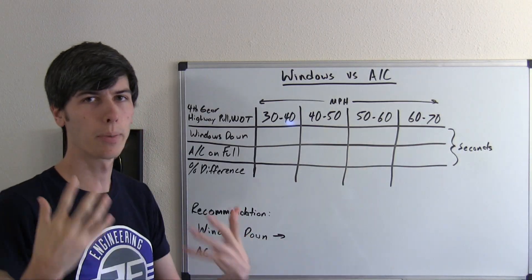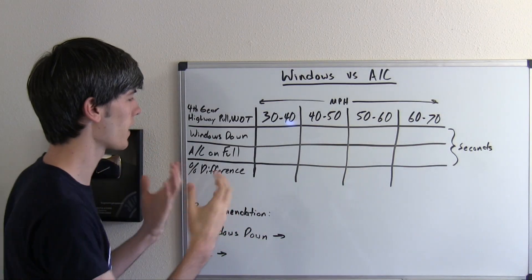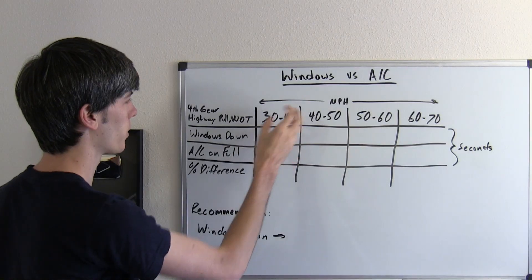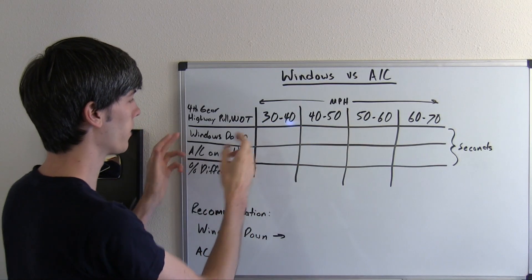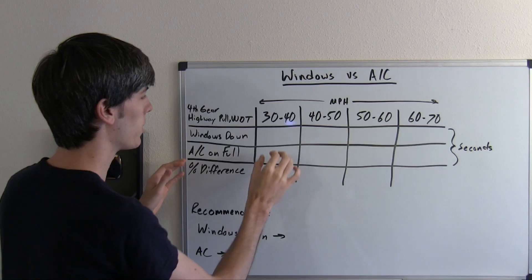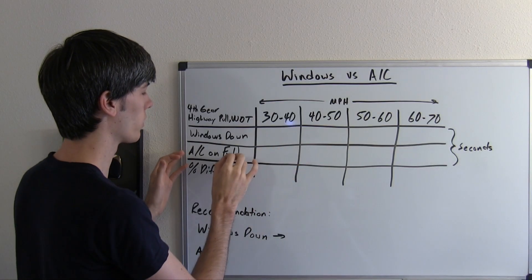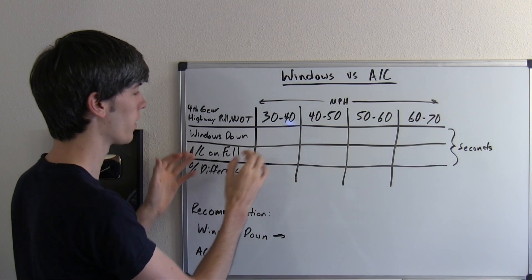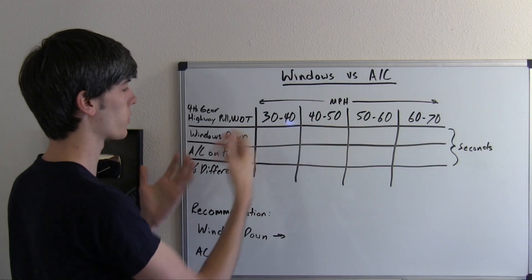etc. The logic here is if it takes longer to accelerate from 30 to 40 miles per hour with the AC on than with the windows down, then that means I'm using more power having the AC on than having the windows down and the amount of drag created.